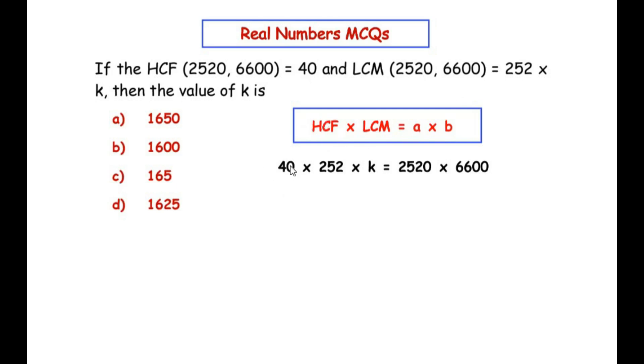So we write: 40 × 252 × k = 2520 × 6600. We've taken a as 2520 and b as 6600. Now to find the value of k, we're going to take these two numbers to the other side of the equal sign, so k = (2520 × 6600)/(40 × 252).